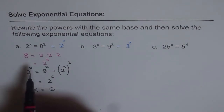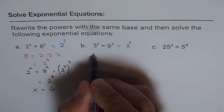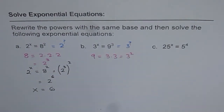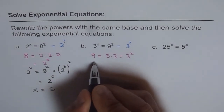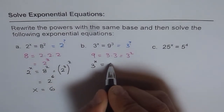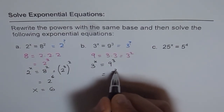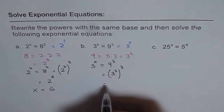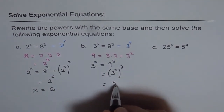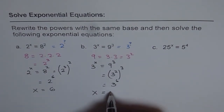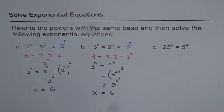Let's start like we did last time. 9 can be written as 3 times 3, or 3 square. Therefore, we can rewrite our question. Our question becomes 3 to the power of x equals to 9 cube, and 9 can be written as 3 square. So I will write 9 as 3 square to the power of 3, and that gives me 3 to the power of 6. So I have 3 to the power of x equals to 3 to the power of 6, and therefore x equals to 6. That is my solution.